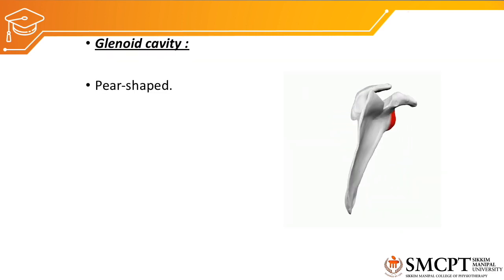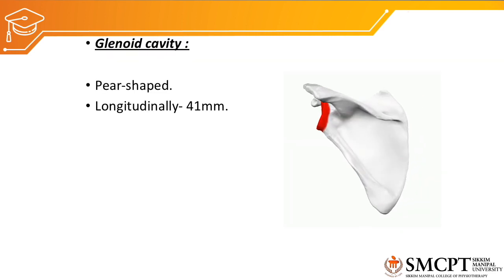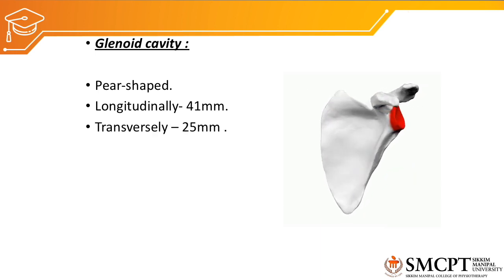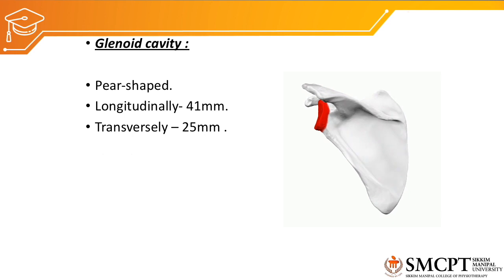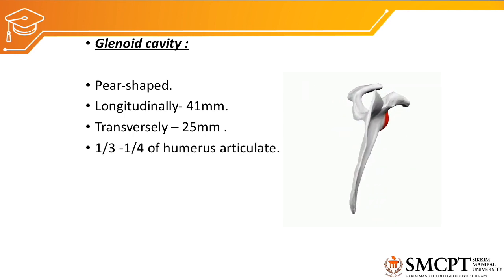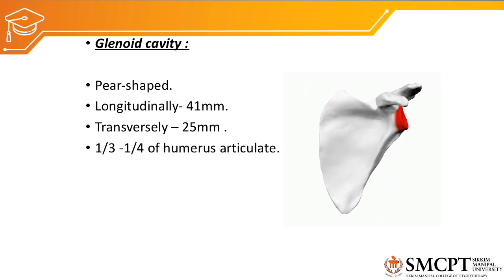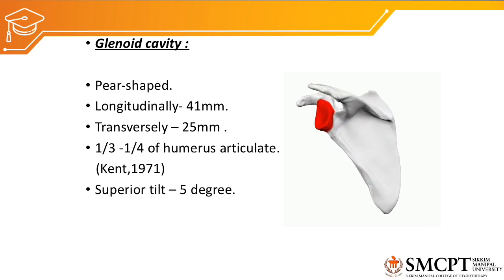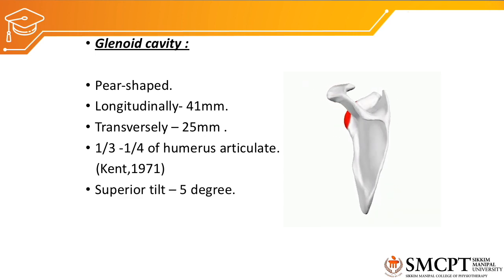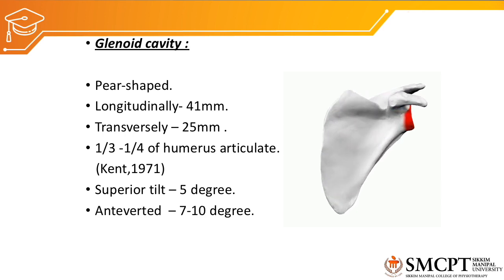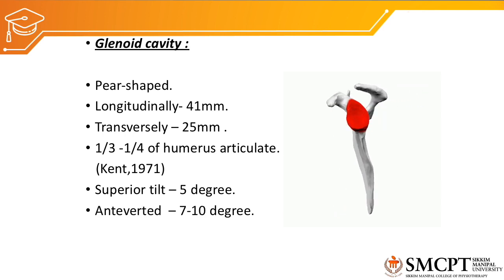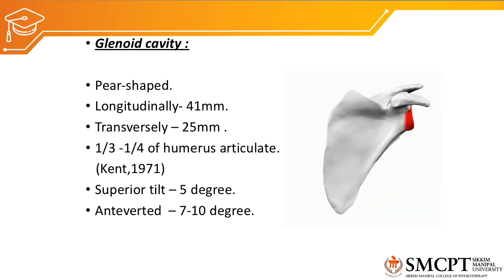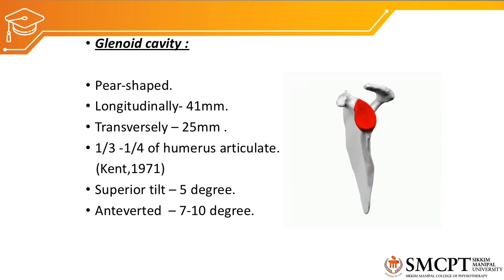The glenoid cavity is a pear-shaped fossa which is 41 mm longitudinally and 25 mm transversely. In this glenoid fossa, one-third to one-fourth of the humerus articulates. The scapula is in a slightly superior tilt position of around 5 degrees, and the scapula is slightly anteverted up to 7 to 10 degrees.